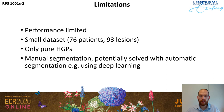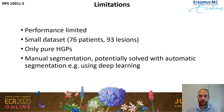Our study has several limitations. First, the performance is limited — it's not currently suitable for clinical practice. Second, we have a small dataset of only 93 lesions from 76 patients, which may be one reason performance is not yet sufficient. Third, we only looked at pure HGPs as a proof of concept; there are also mixed HGPs, and it would be interesting to see how radiomics handles those. Lastly, we currently rely on manual annotations, which is also not suitable for clinical practice, though automatic segmentation methods such as deep learning may solve this.